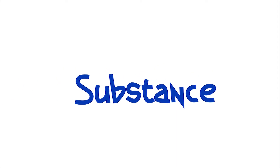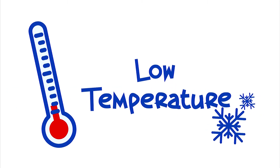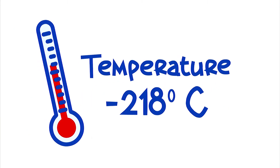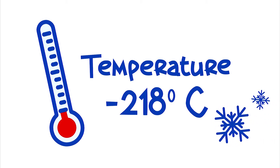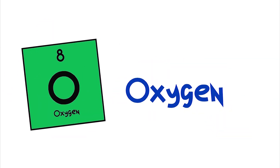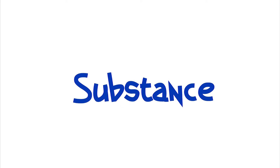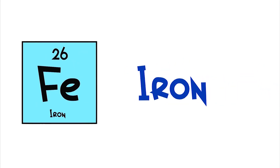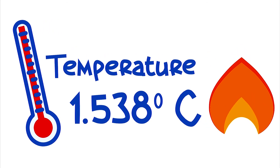If a substance is found in nature in the gaseous state, it will need a much lower temperature to pass into the liquid state. Oxygen, for example — its fusion point is 218 degrees below zero, or negative 218 degrees. This is the temperature required for oxygen to turn liquid. And what about a substance that we find in nature in the solid state? What is the temperature to become liquid? Iron, for example, has its fusion point at 1538 degrees Celsius.